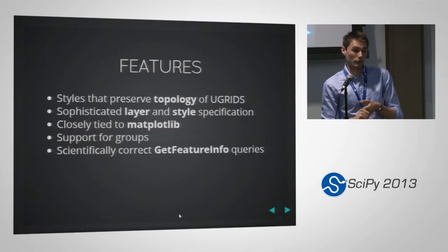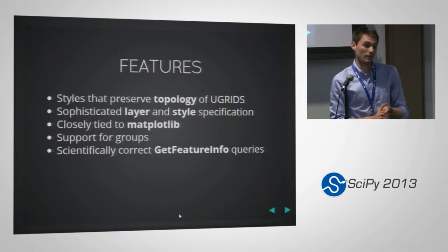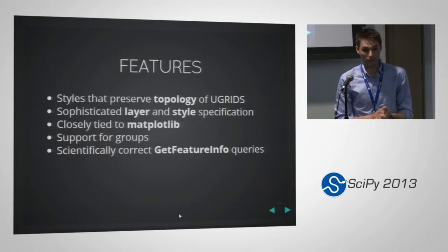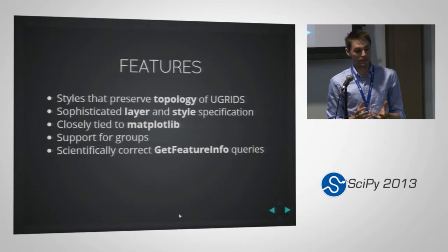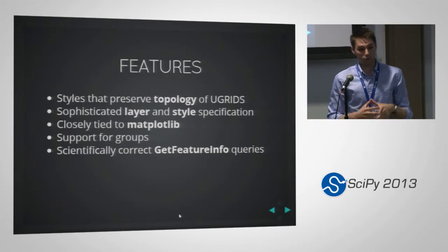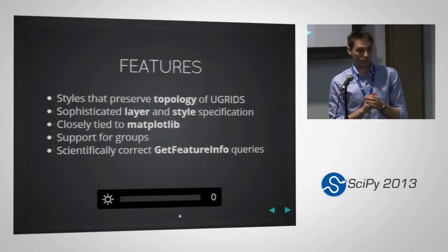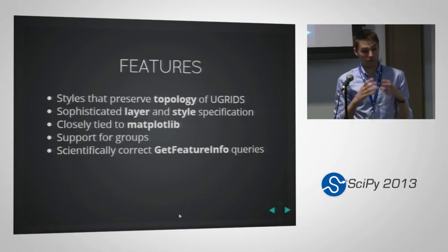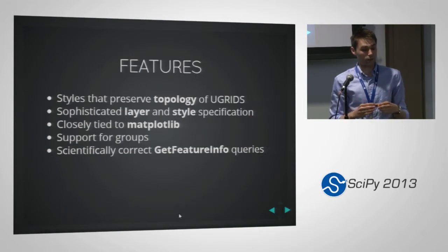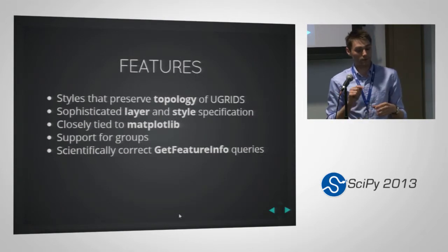We also provide scientifically correct get-feature-info queries. For instance, if you click inside a cell and the parameter you're interested in is located on the cell face, we use spatial querying and spatial relationships — rather than finding the closest node, we recognize you're on a cell and return that cell's value.